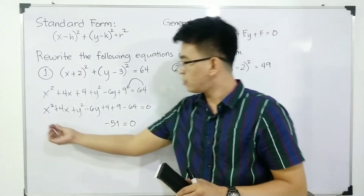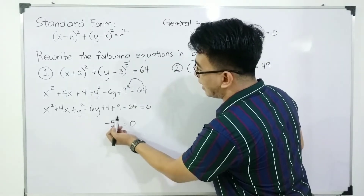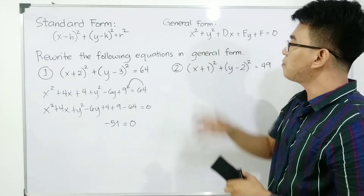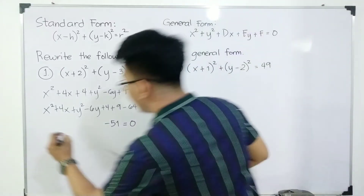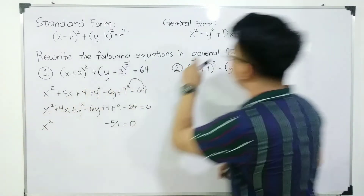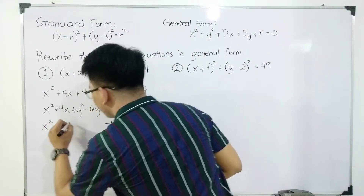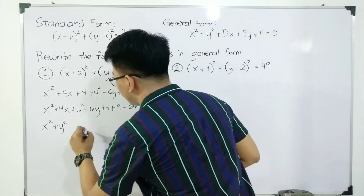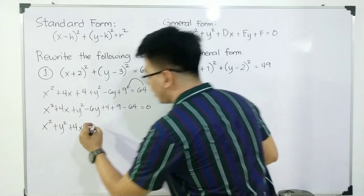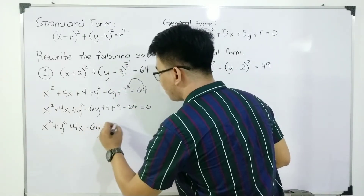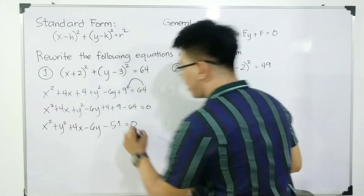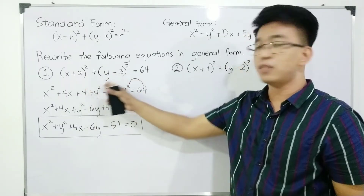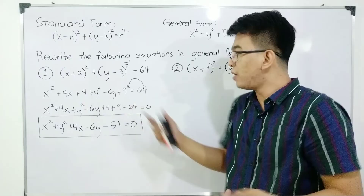In the general form, all terms are placed on the left side of the equation. Rearranging, we write x² plus y² first, then the linear term of x, giving us x² plus y² plus 4x minus 6y minus 51 equals zero. This is now the general form of the given equation (x plus 2)² plus (y minus 3)² equals 64.